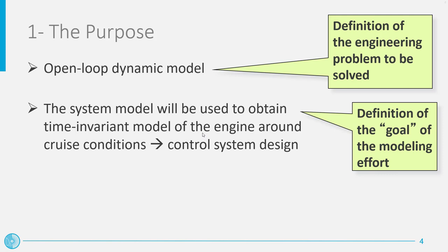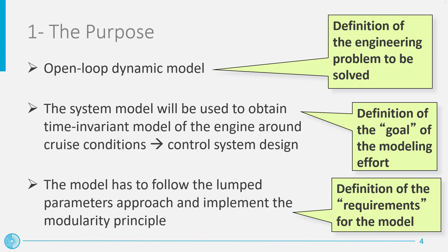Such a linear model may then be used to design the control system. In this initial step of the modeling activity, we have also to define the requirements of the model itself. In particular, we want to develop a model based on first-principle laws to make the model easy to adapt or extend. To have a reasonable computational time, the model equations have to be derived following the lumped-parameter approach. Moreover, the model has to implement the modularity principle to facilitate future reuse or adaptation of the developed code.